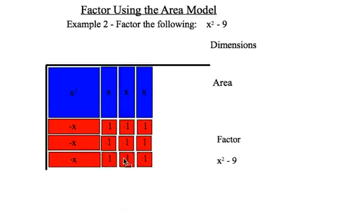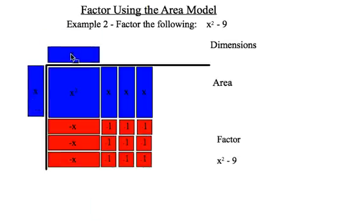And if I count up my edge dimensions here, x times x is x squared, x times positive one is positive x. So those are working nicely, so I'll fill in the rest of those, and I will have a dimension of x plus three on the top.